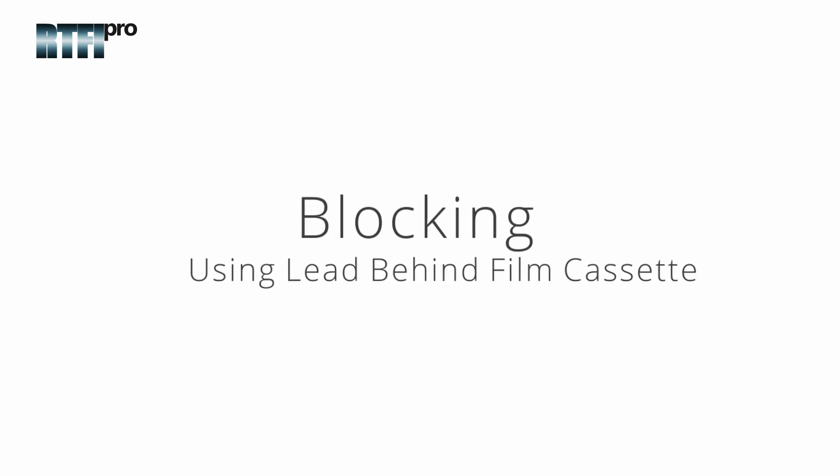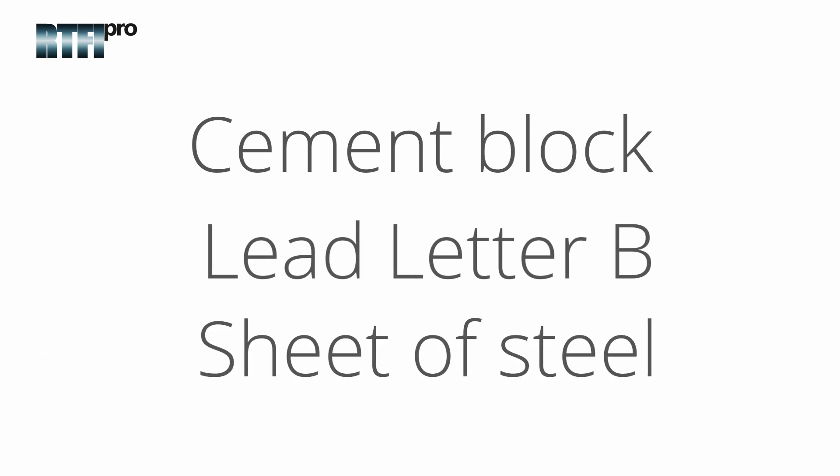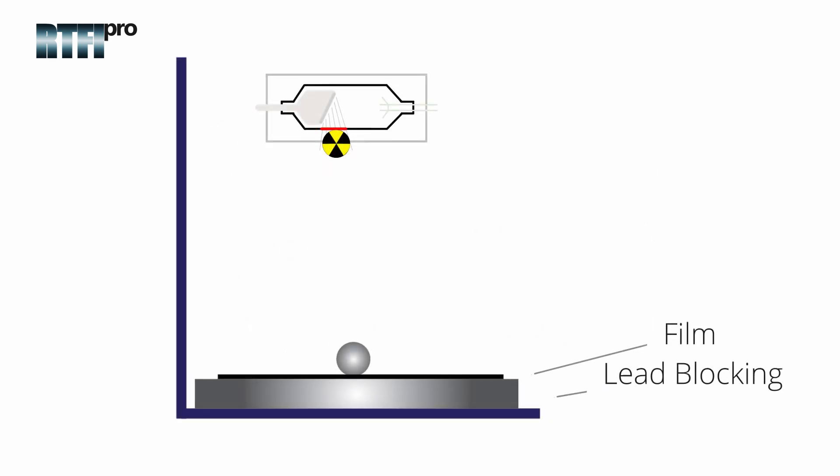Blocking using lead behind the film cassette. When the primary radiation beam is directed onto an object such as the floor or wall, this radiation increases the risk of radiation returning to the film and in some cases providing an image on the radiograph from what was on the back side of the film or even from the side of the film, such as a cement block, lead letter B, sheet of steel, etc.